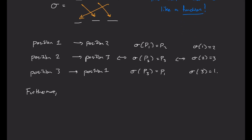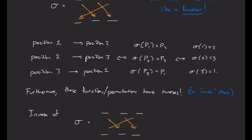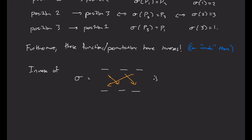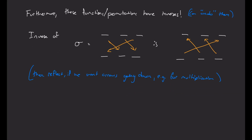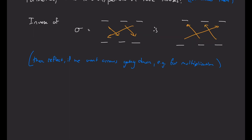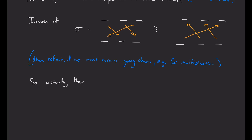Furthermore, these functions are actually invertible — in other words, we can undo their actions. So just take any permutation, for example our sigma above, and we can undo it by simply reversing the arrows. So can you think of what the inverse of sigma is here, in terms of numbers? Because we can invert these actions, that means our functions are actually perfect one-to-one correspondences — in other words, they're bijective.